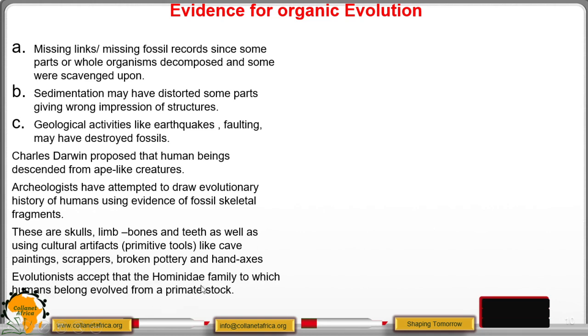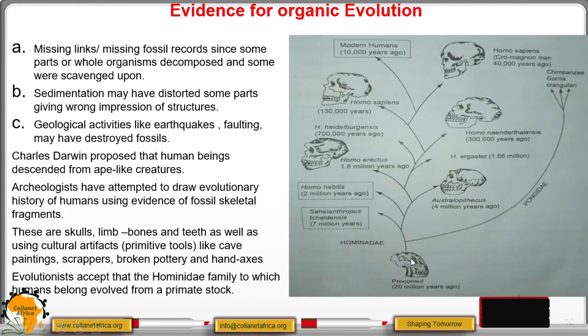Evolutionists accepted that hominid family to which human beings belong evolved from a primate stock. As you can see here, this is the skull of a Proconsul, a member of the hominid family to which human beings belong, dated 20 million years ago. And then from there evolutionary history has been drawn and compared to the Australopithecus which occurred 4 million years ago and this is its skull. There are some changes in the structure of the skull. Then Homo erectus occurred around 1.8 million years ago. You can see the differences, there is change in the structure of the skull.